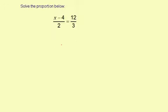Solve the proportion below. To solve the proportion, we're going to cross-multiply. So we're going to multiply 3 times the quantity of x minus 4, equals 2 times 12.